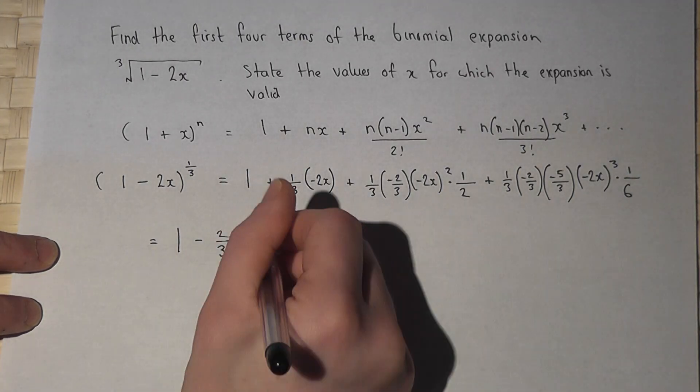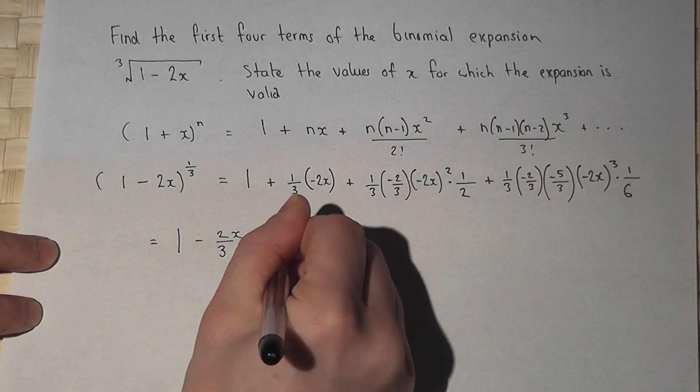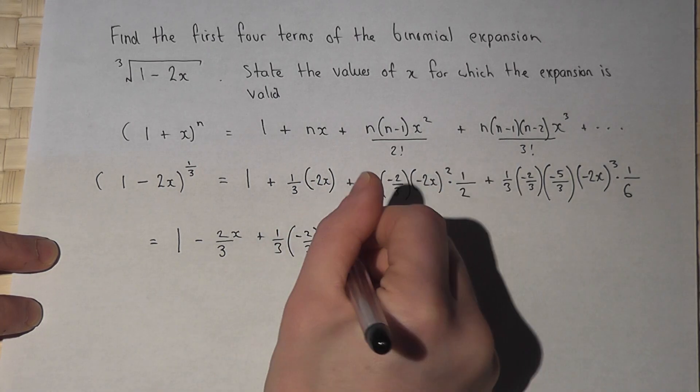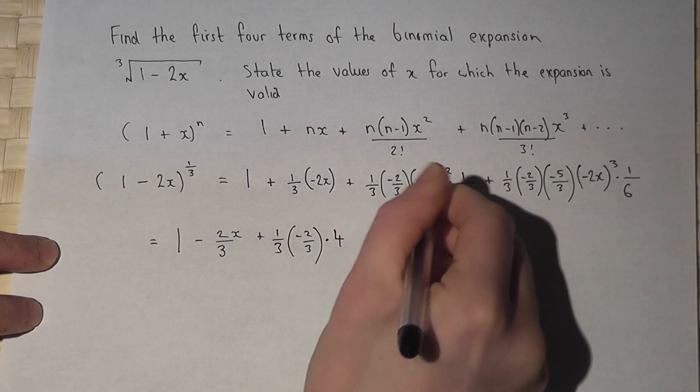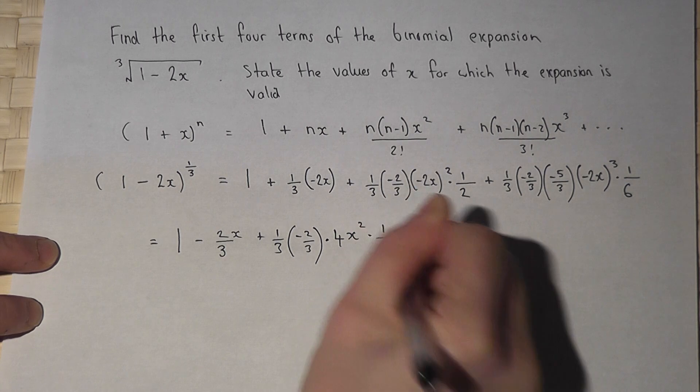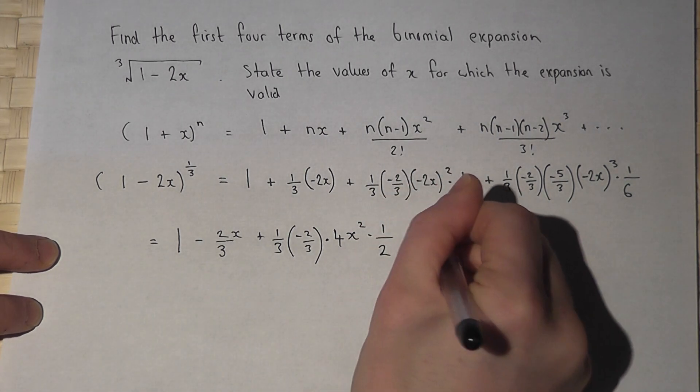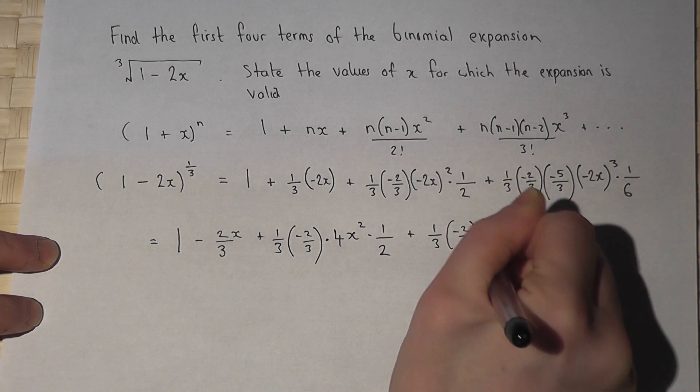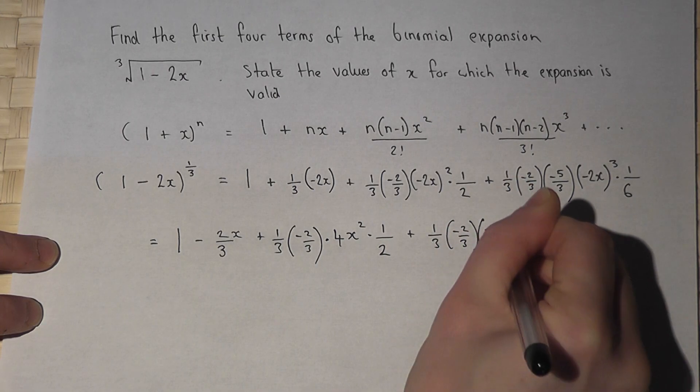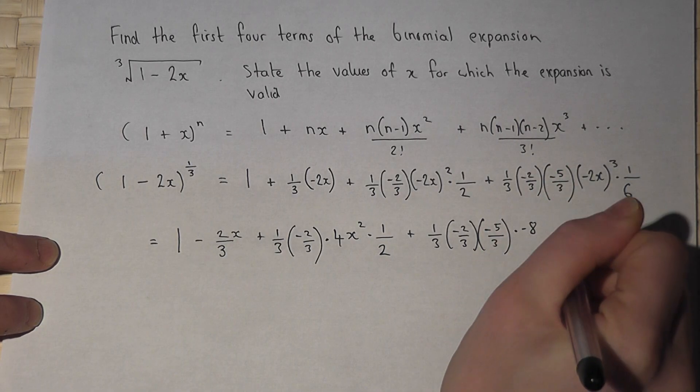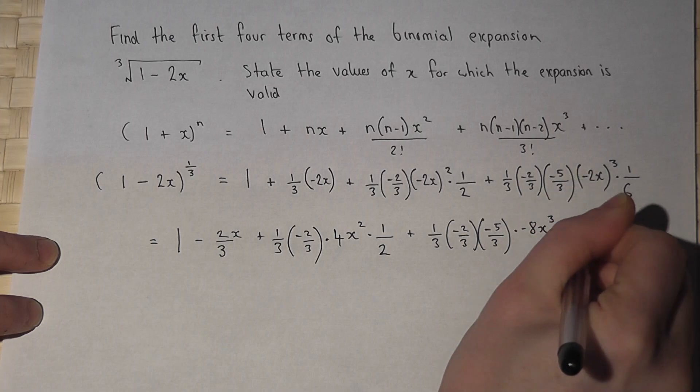I'll work out the powers first. So I've got a third minus 2 thirds. Minus 2 squared is 4. x squared times by 1 half. And then again. 1 third minus 2 thirds minus 5 thirds. Minus 2 cubed is minus 8. x cubed times by 1 sixth.